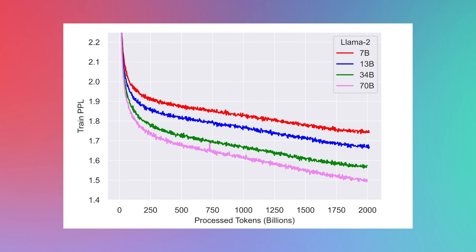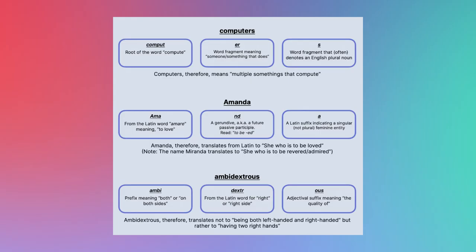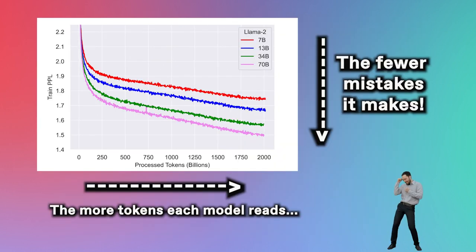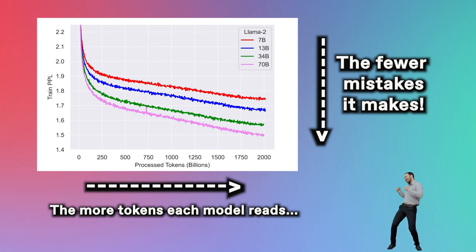The x-axis measures the number of tokens processed during training. Each token can be thought of as a word or word fragment. The y-axis measures the loss of the model — the quantity directly related to the number of linguistic mistakes made during training. The more tokens Llama 2 reads, the lower the loss, meaning the fewer mistakes it makes when generating new sentences.